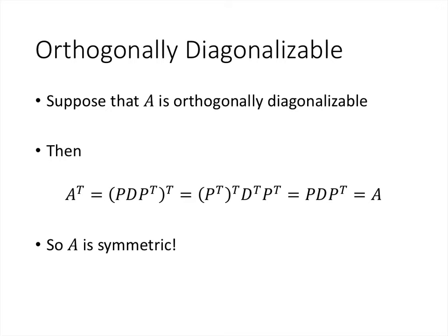If we have an orthogonally diagonalizable matrix, what does its transpose look like? When we take the transpose of a product of matrices, we take the transpose of each matrix but reverse the order. So we get P transpose transpose, D transpose, P transpose. The double transpose gives back P; the transpose of a diagonal matrix is itself because we're just swapping zeros. So A transpose equals P D P transpose, which equals A. Therefore any orthogonally diagonalizable matrix must be symmetric.